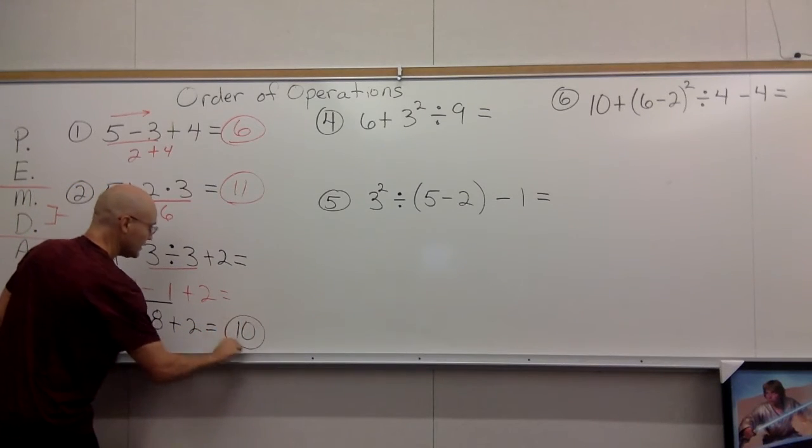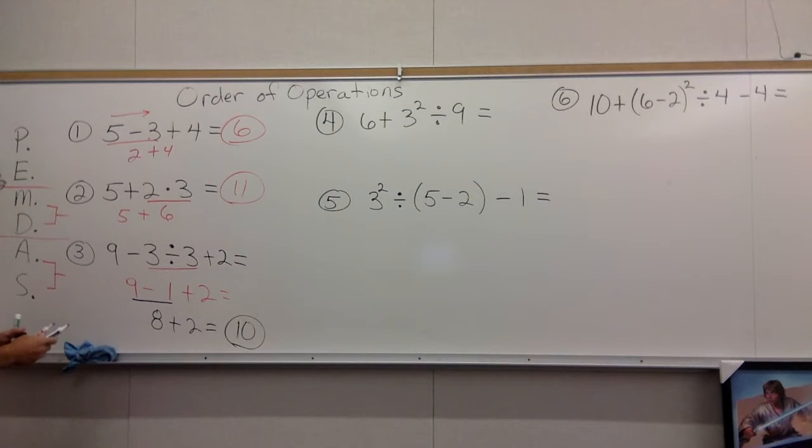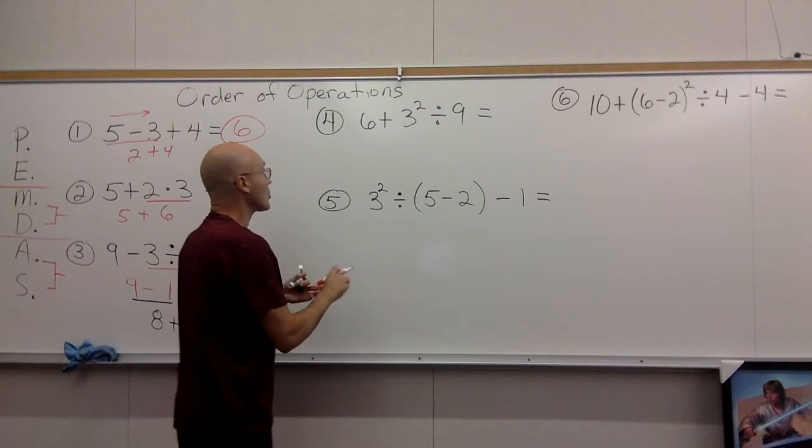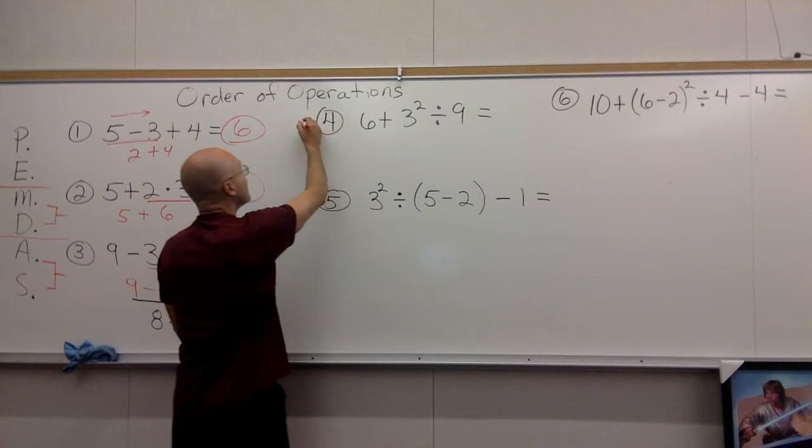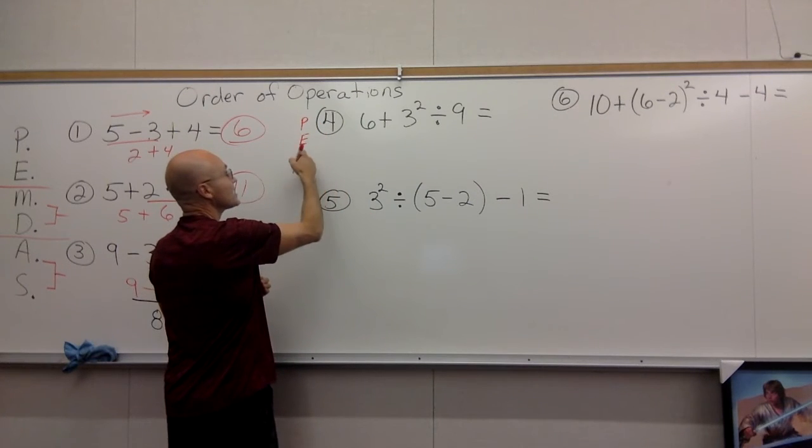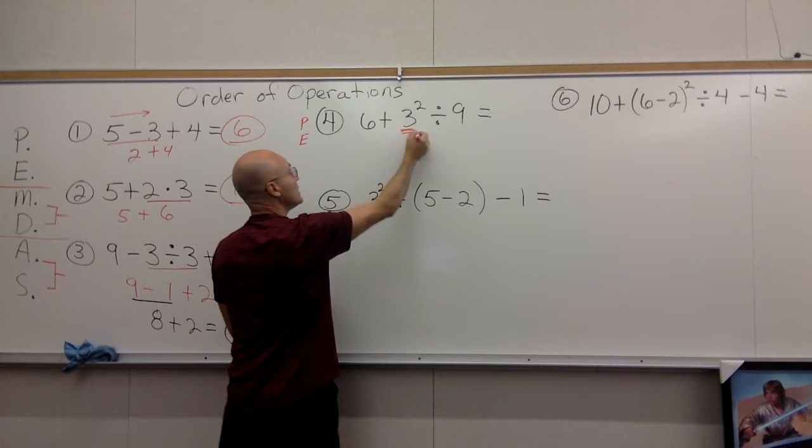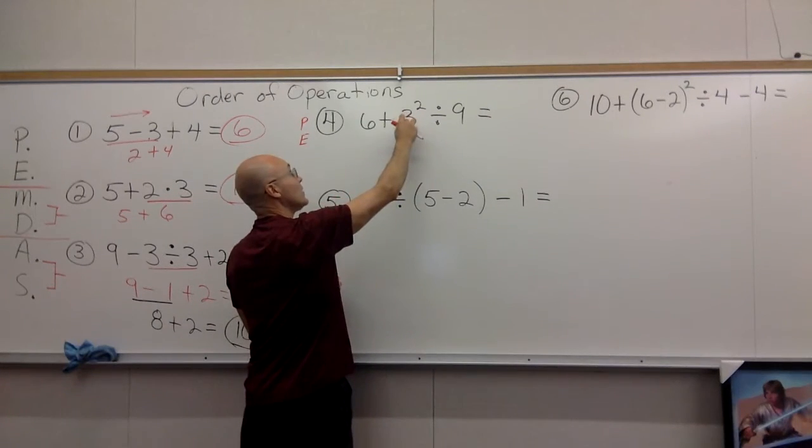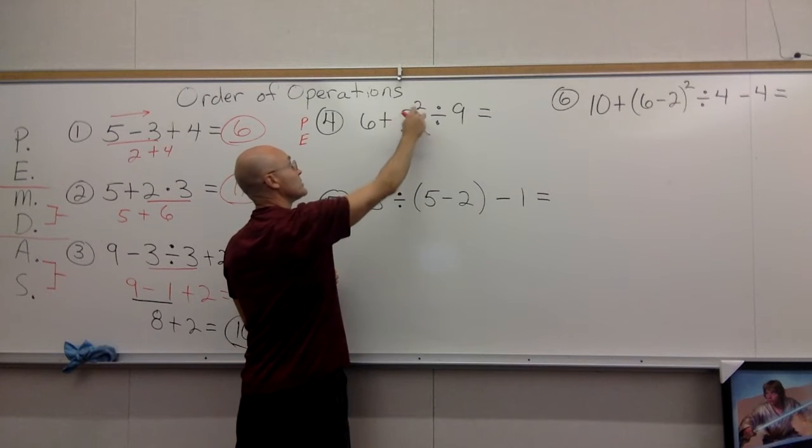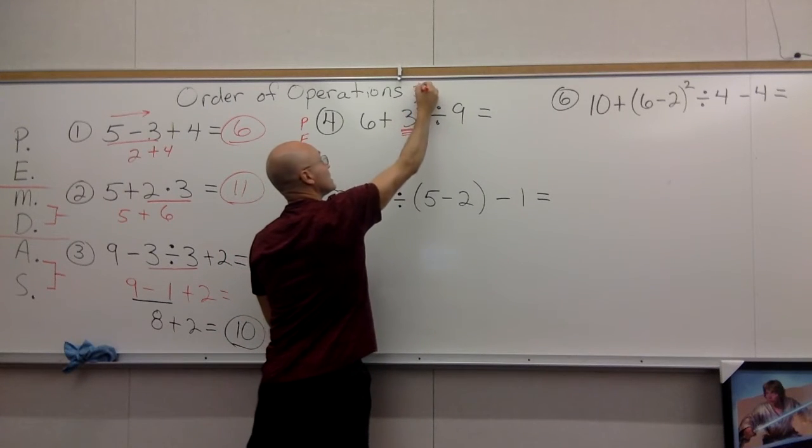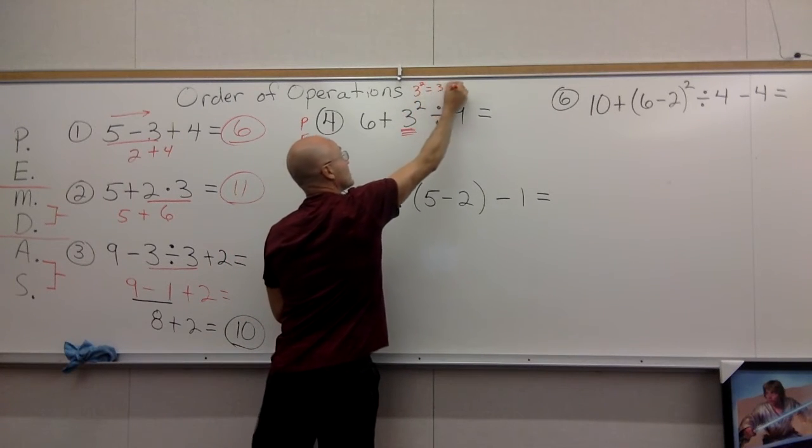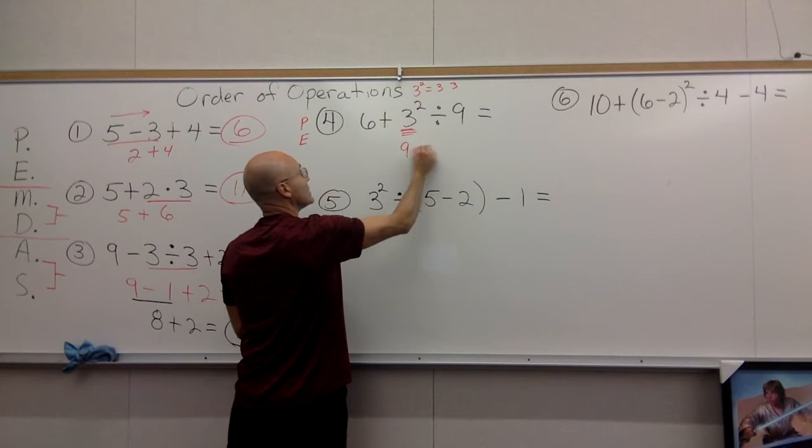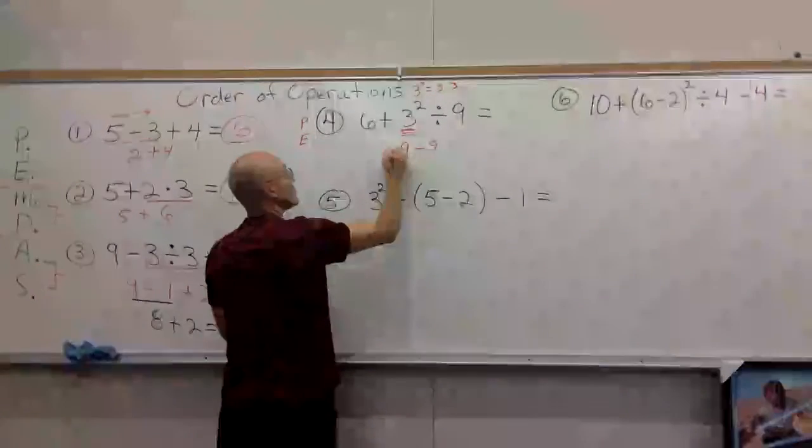Coming over here to number four, things get a little more complicated because there is no parentheses but there is an exponent. This guy needs to be prioritized, he's the most important thing to do. 3 to the second power, or 3 squared, is the same thing as 3 × 3, so you wind up with 9.